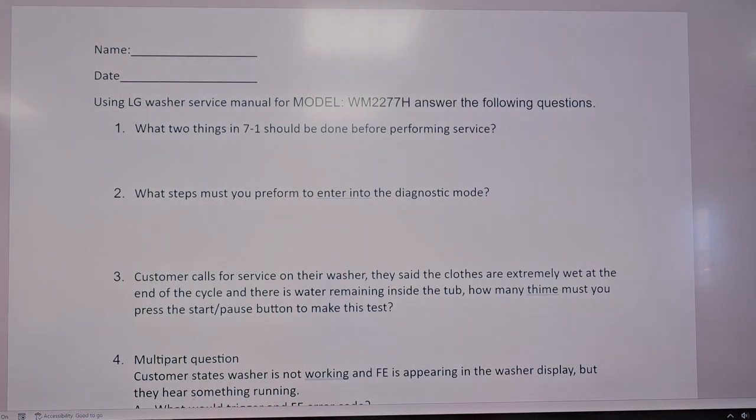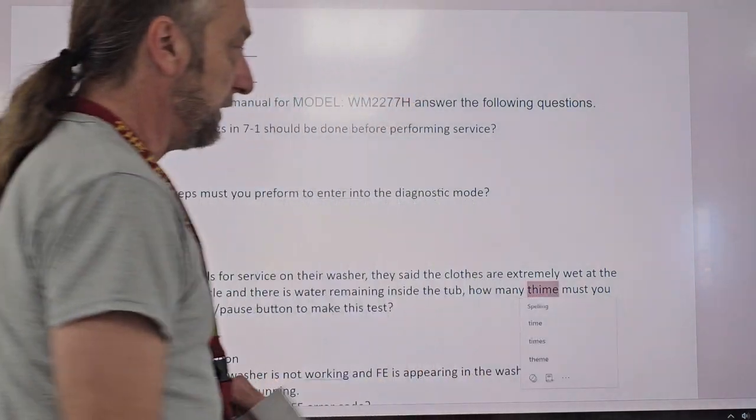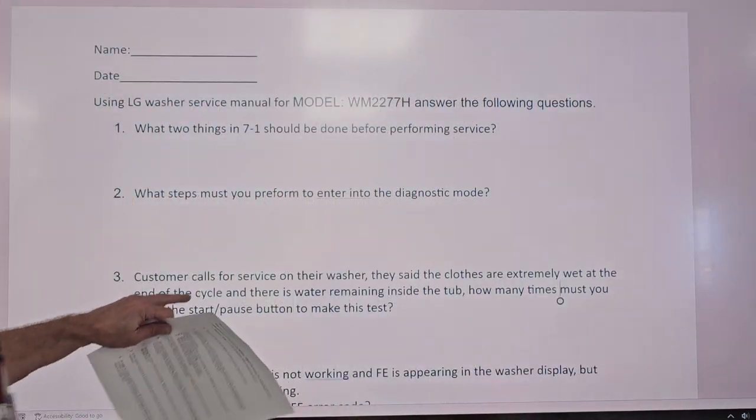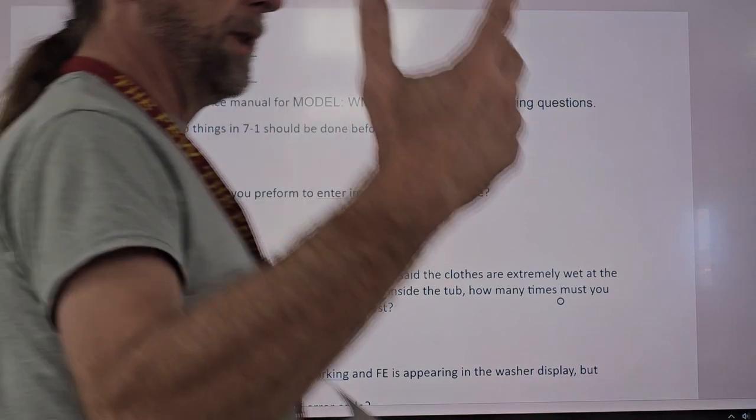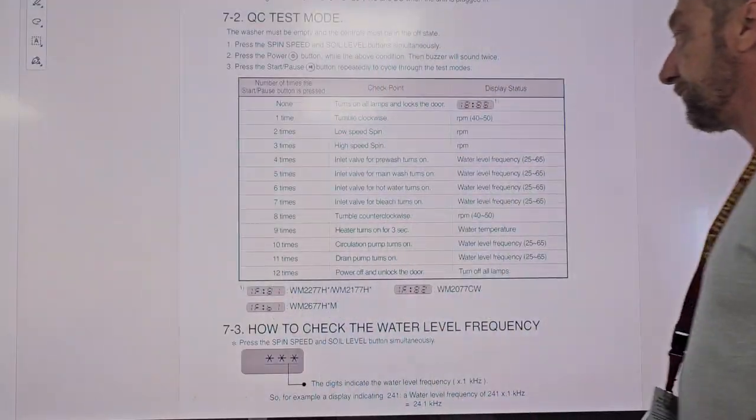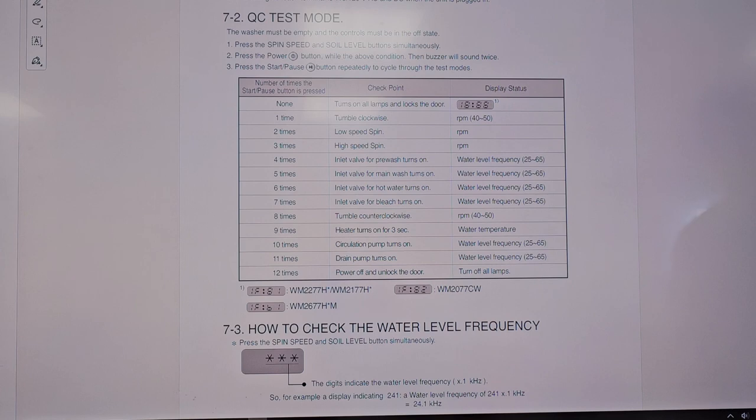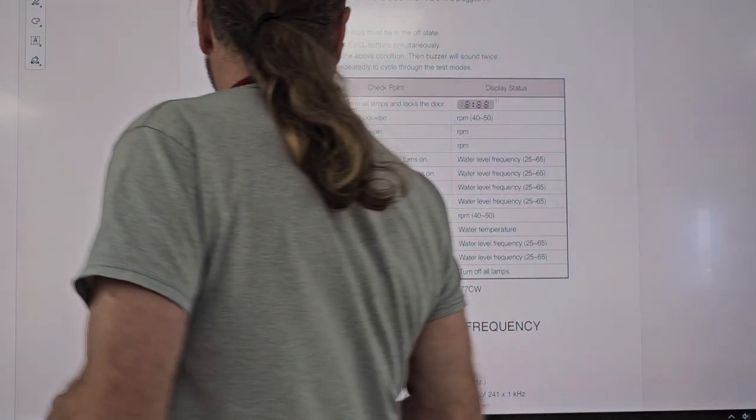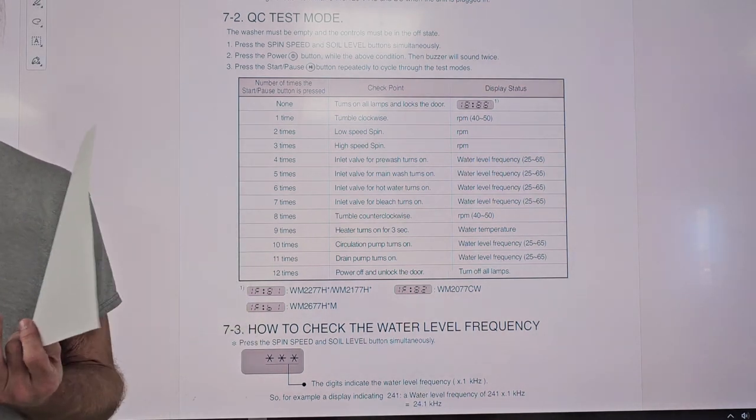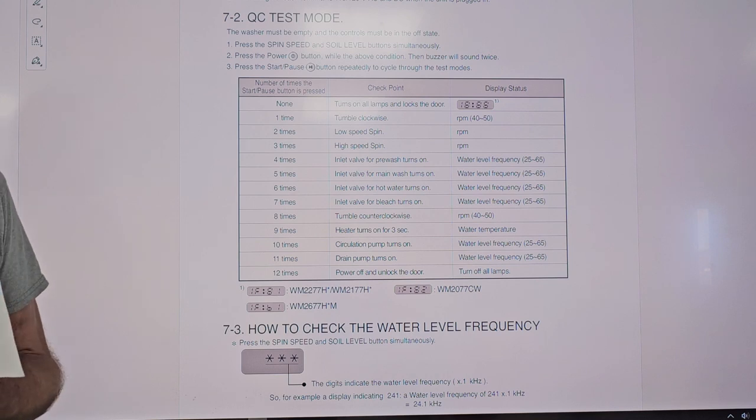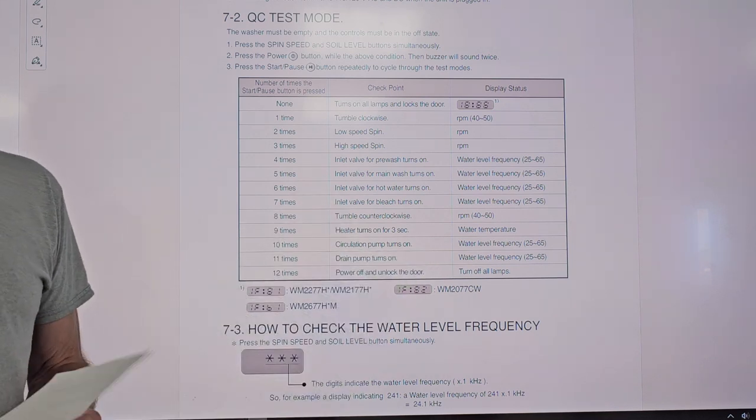Customer calls for service on their washer. They said that the clothes are extremely wet at the end of the cycle and there is water remaining inside the tub. So how many times must you press the start pause button to make this test? So really it's like the step or whatever to get into that. So if we look here, what are we testing? Eleven. Why are we testing eleven? Because it sounds like it's a drain pump. Yeah. By the complaint that the customer states, the clothes are wet at the end of the cycle. There's water in the bottom of the tub.